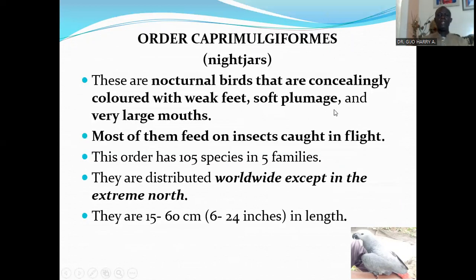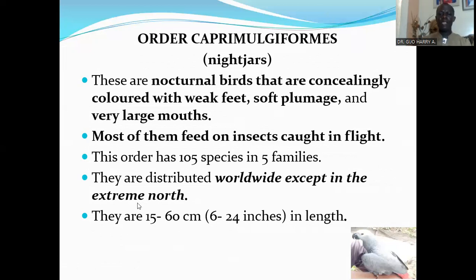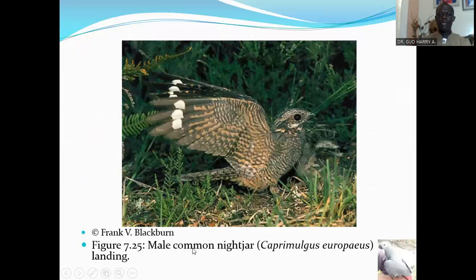The next order is Order Caprimulgiformes, which consists of the nightjars. These are nocturnal birds that are concealingly colored, with weak feet, soft plumage, and very large mouths. Most of them feed on insects caught in flight. This order has 105 species in five families. They are distributed worldwide except in the extreme north. They are 15 to 60 centimeters in length. Here is a male common nightjar.